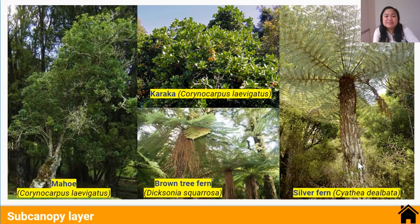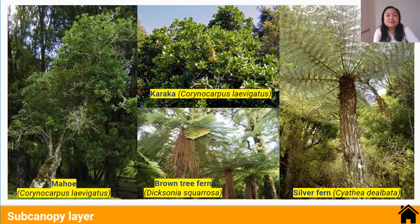The sub-canopy layer is the layer below the canopy, and the third layer furthest from the ground. Trees in the sub-canopy layer have dense foliage — dense leaves — that shelter the sub-canopy layer from the sun and wind. Therefore, trees in the sub-canopy layer experience medium light intensity, medium temperatures, medium wind strength, and medium humidity. Examples of trees found in this layer are Mahoe, Karaka, brown tree ferns, and the silver tree fern, as well as young canopy and emergent trees.